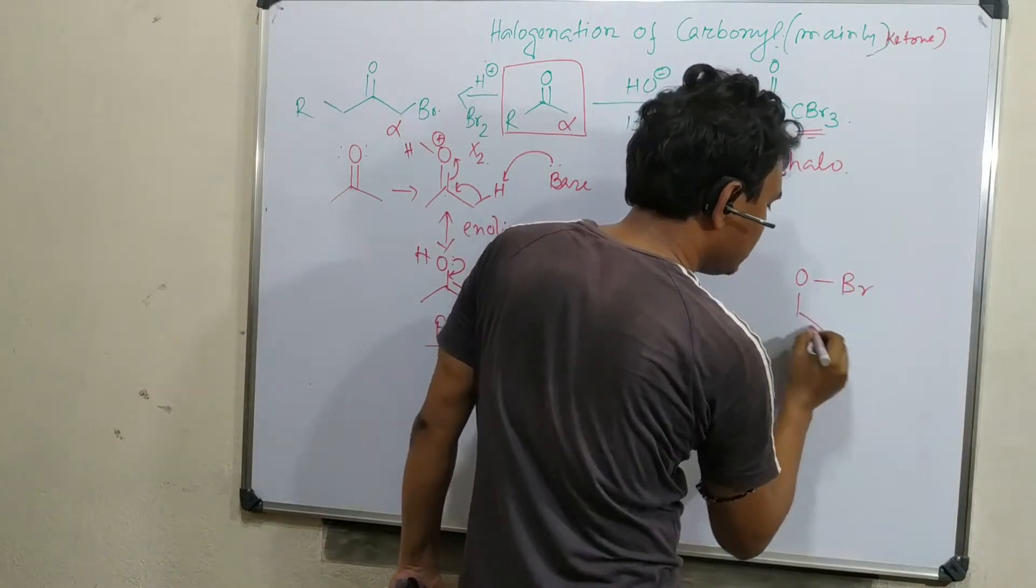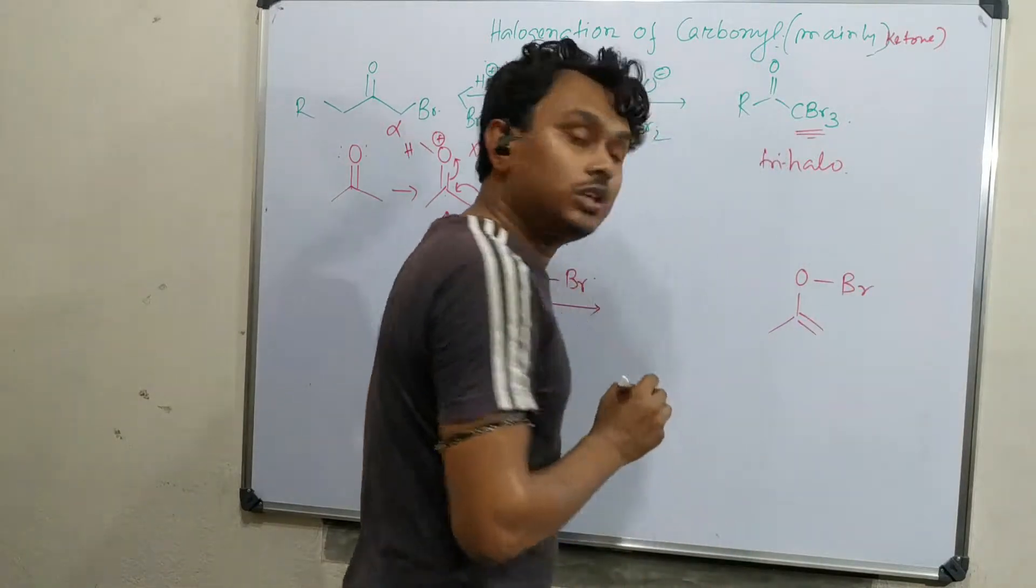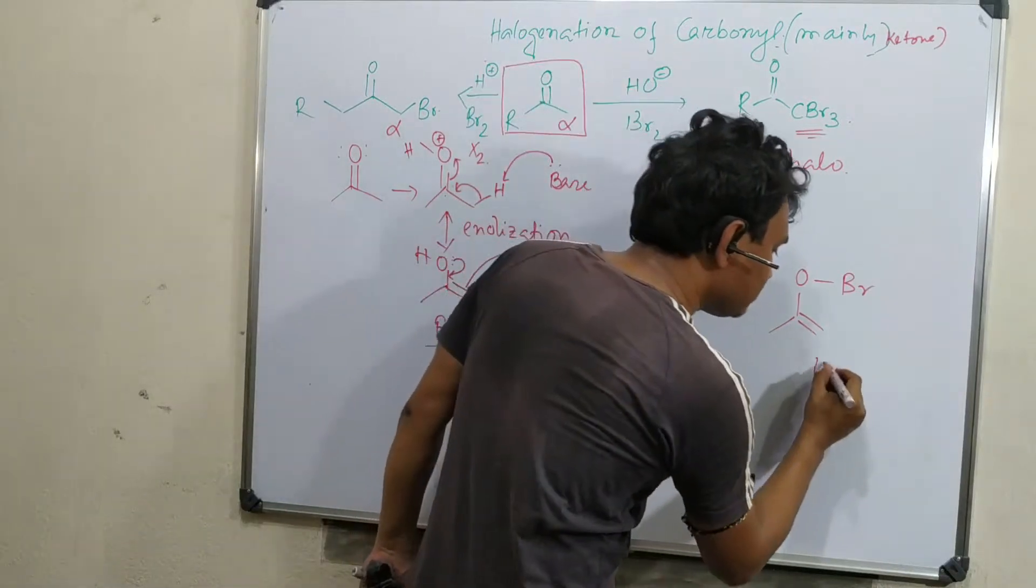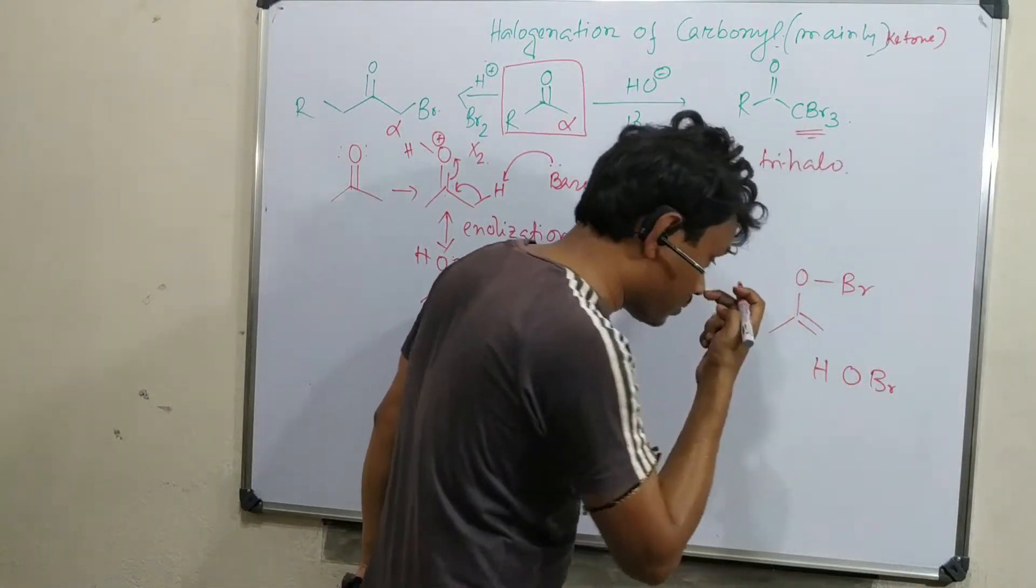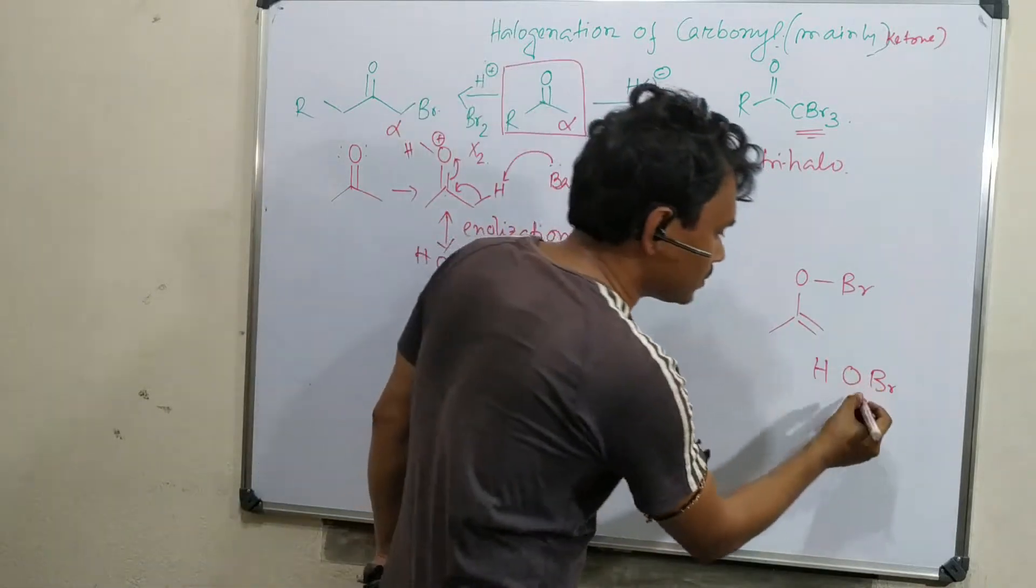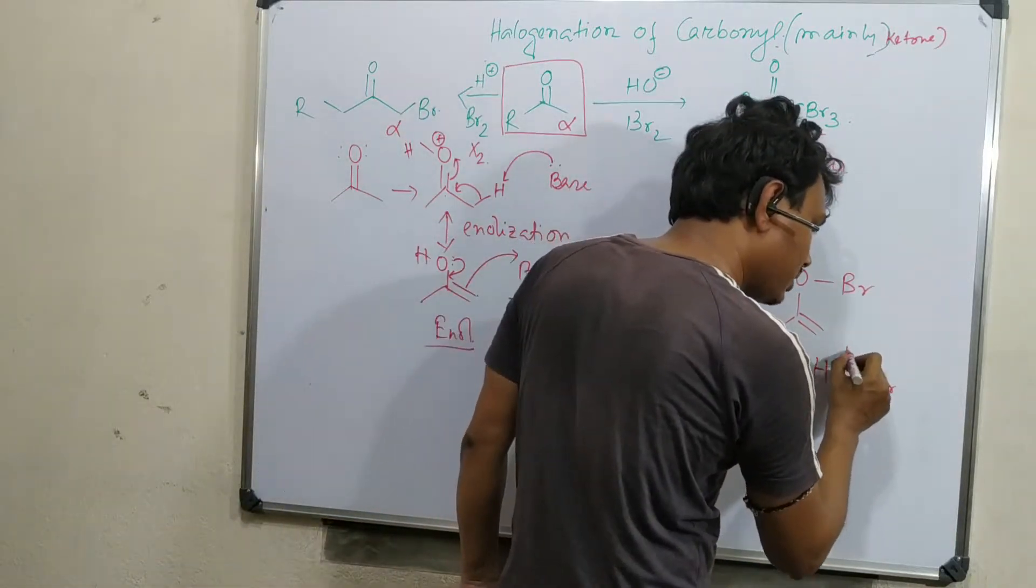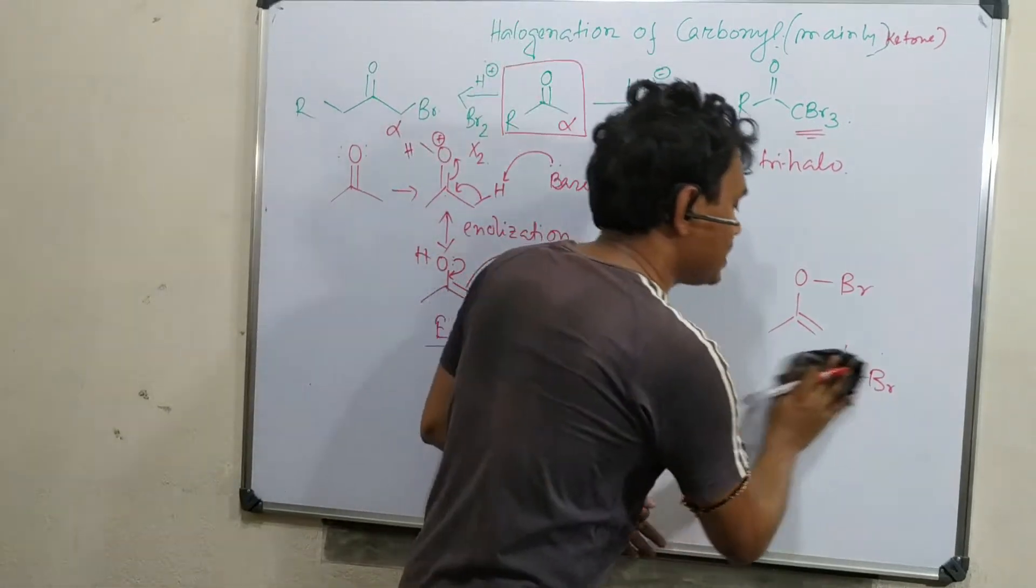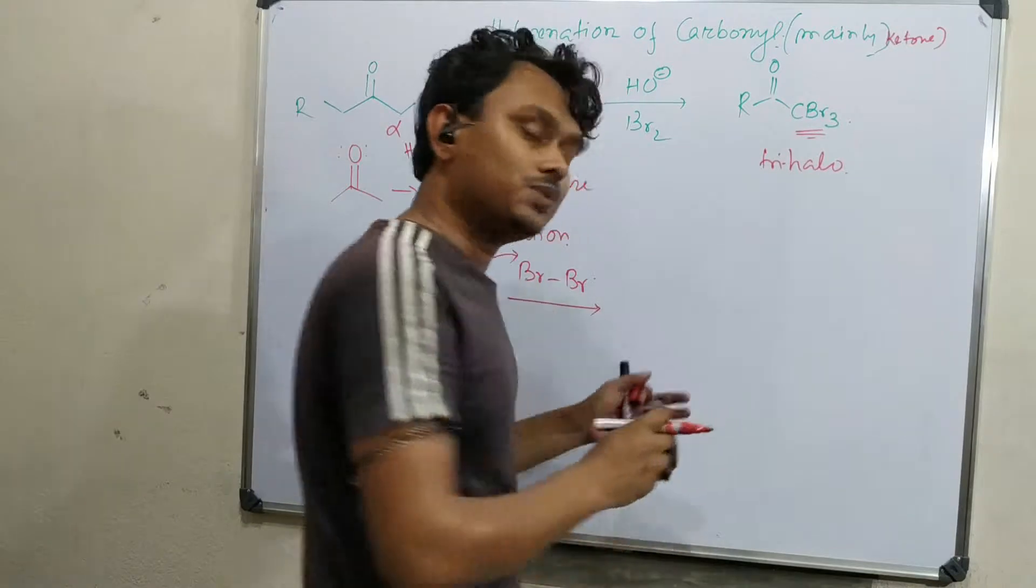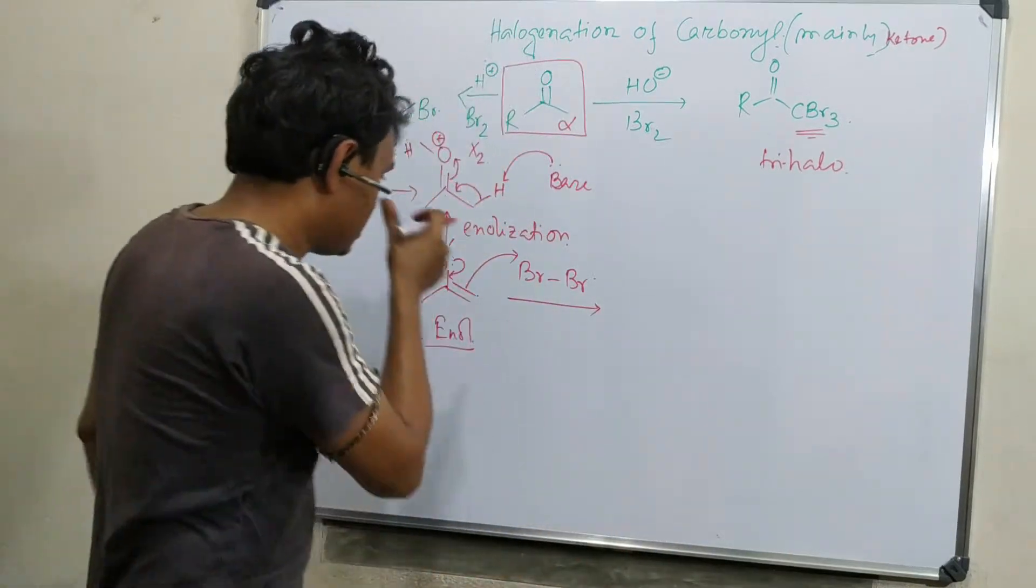Logically, you could expect some attack from the oxygen side. What will be the product? O-Br. Will it be stable? You know one example: HOBr, hypobromous acid. It decomposes. This bond is not stable because both are electronegative. So reaction will not happen from there. If something happens, it will decompose.